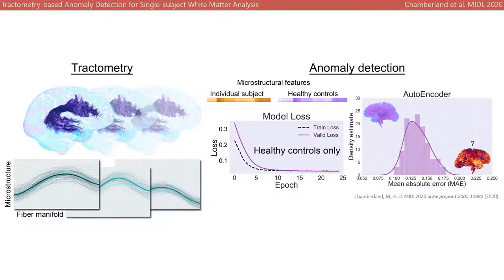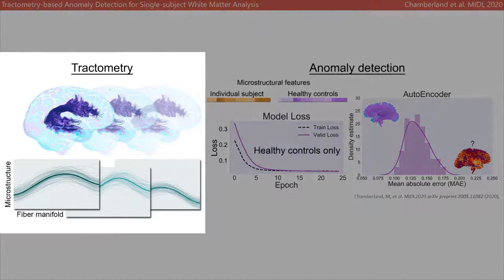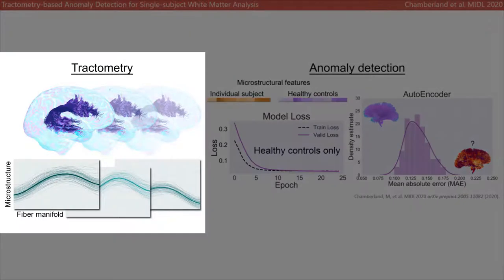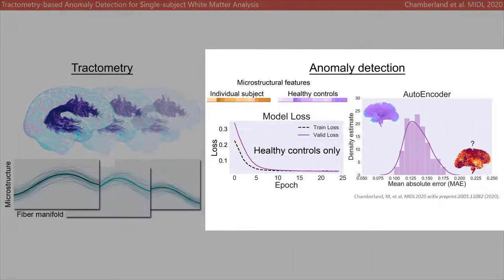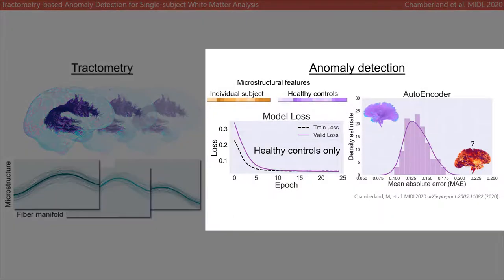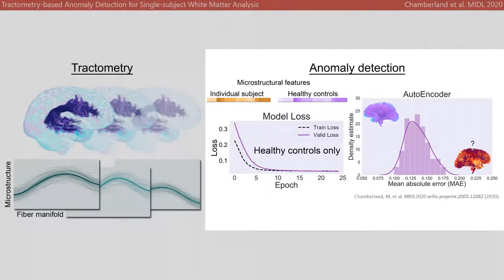We developed an anomaly detection framework to push diffusion MRI tractometry towards single-subject analysis. This is done by profiling microstructural properties along the manifold of white matter pathways using tractometry, and by learning a set of normative microstructural features to better discriminate patients from controls.